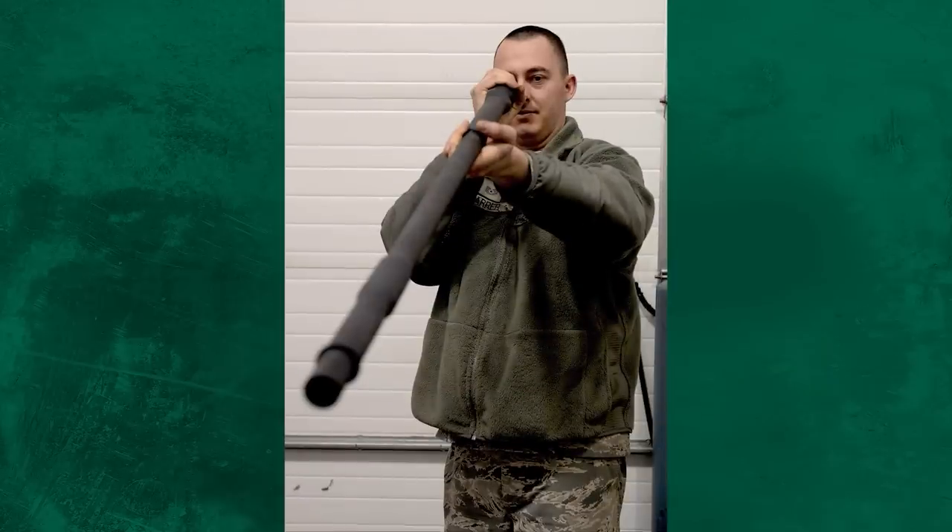The system is built around the M61 Vulcan Gatling autocannon and weighs around 14,000 pounds. The M61 Vulcan has six independent barrels that fire a 20 by 102 millimeter cartridge at 6,000 rounds per minute, although it has a slower rate of fire on the C-RAM at around 4,000 rounds per minute, with a muzzle velocity of 3,600 feet per second, an effective firing range of 1,625 yards, and a max range of 6,000 yards.